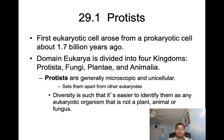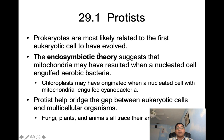Prokaryotes are most likely related to the first eukaryotic cell to have evolved. The endosymbiotic theory suggests mitochondria may have resulted when a nucleated cell engulfed aerobic bacteria, and chloroplasts may have originated when a nucleated cell with mitochondria engulfed cyanobacteria. Protists help bridge the gap between eukaryotic cells and multicellular organisms, and fungi, plants, and animals all trace their ancestry to a protist.